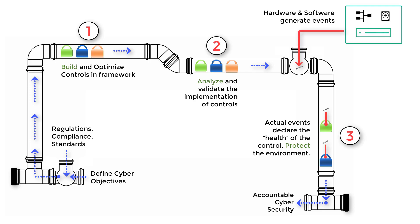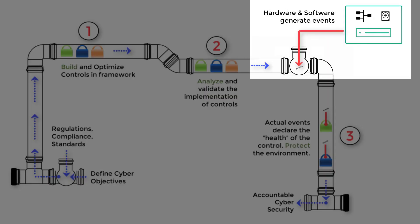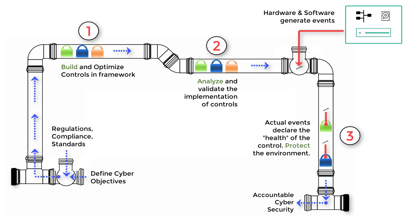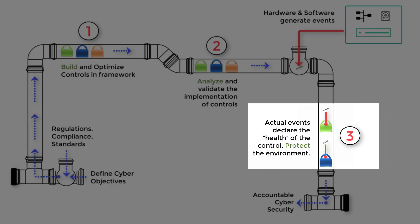By piping in the event logs occurring within your hardware, software, and operating system, we're able to check the health and integrity of every control implemented within your environment. When an event occurs, continuous monitoring is happening — we're constantly looking at and analyzing the logs. When we see an event occur, we automatically flag the control that is now unhealthy, and you do this in near real time.